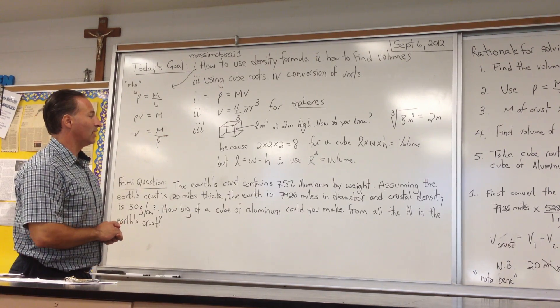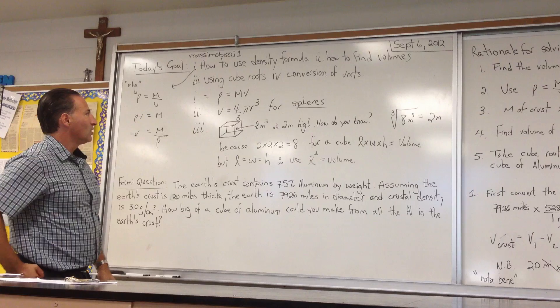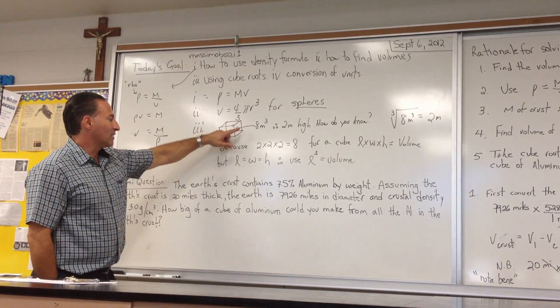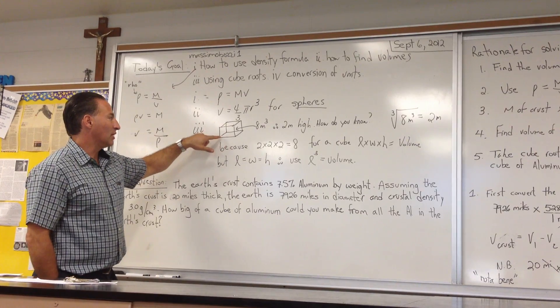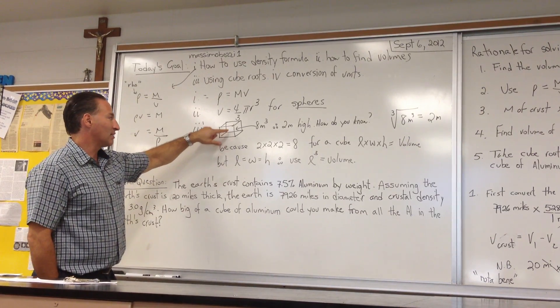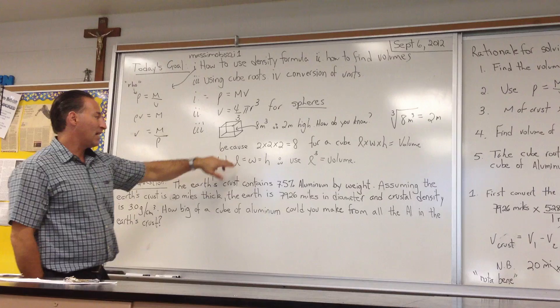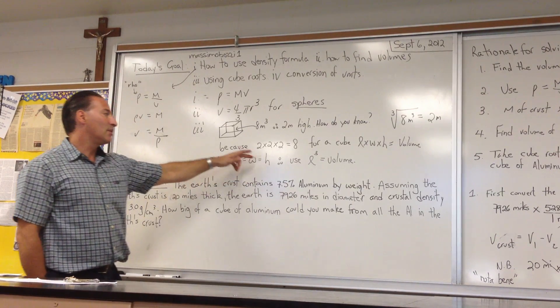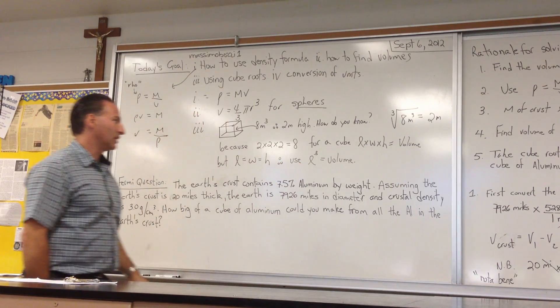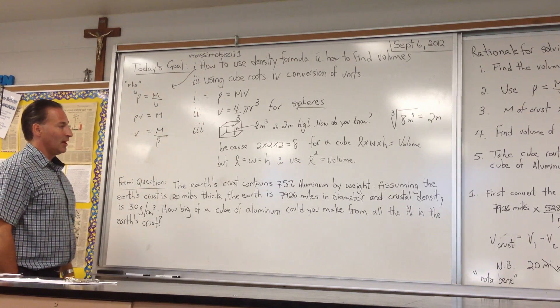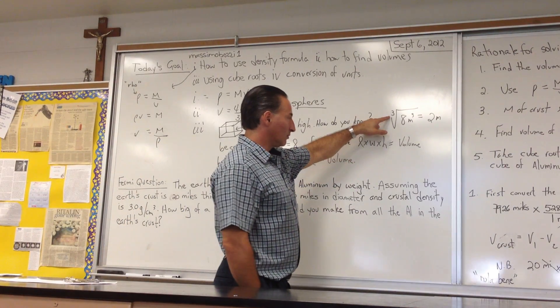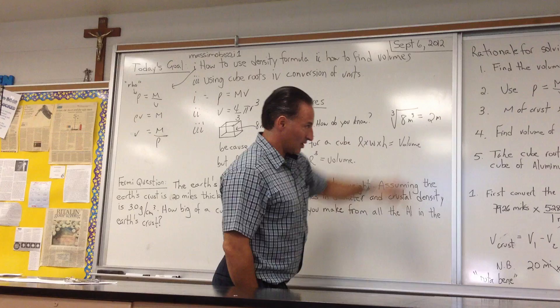The third skill is learning how to find cube roots. Because once you find the volume of a cube, given that a cube has all sides equal, and the volume is length times width times height, and length equals width equals height in a cube, we can use L cubed to find the volume. If we have the volume, we can take the cube root and find the length of one of the sides.